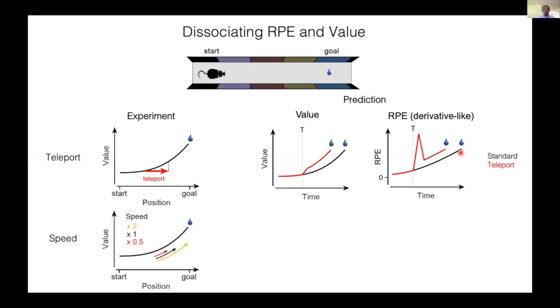Another illuminating experiment is a speed manipulation. If TD error is the temporal derivative of value, it should be sensitive to the speed of the movement. Fast speed will result in a greater magnitude of ramp, and slow speed will result in a smaller magnitude of ramp. So if it's a temporal difference error, the magnitude of the response should be dependent on the speed of the movement.